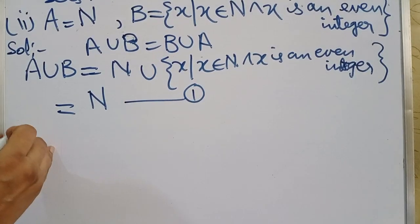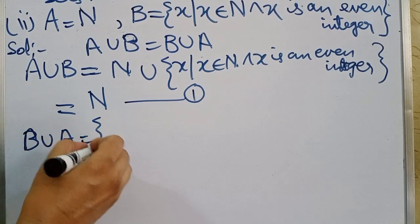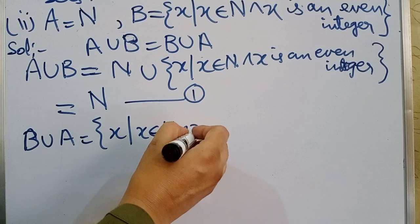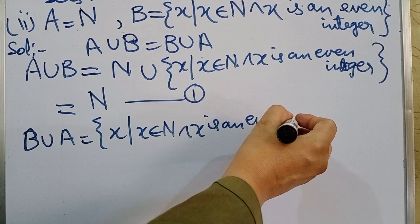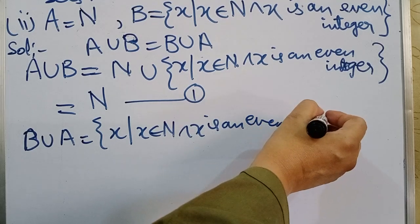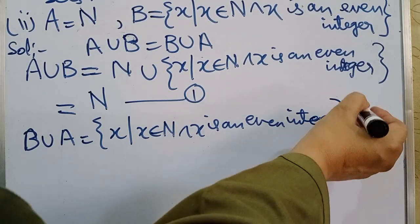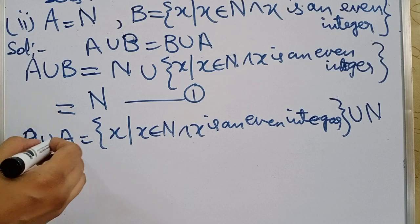Now we prove the other side, B union A. Set B, we have a subset of x such that x belongs to N and x is an even integer, union set N of A.